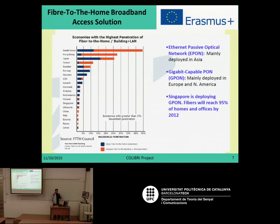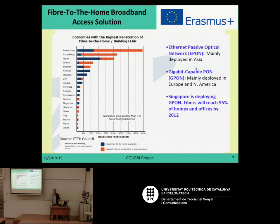How has this been evolving? In a report from the Fiber to the Home Council — we will see several documents from this council, which monitors the market, economics, and trends — we see that in 2009 it was mainly Asia leading the market, with South Korea and Hong Kong first on the list, closely followed by Japan. There were two main standards: Ethernet Passive Optical Network (EPON), mainly deployed in Asia, and Gigabit-capable PON (GPON), mainly deployed in Europe and America. For example, coverage moved from about 50% of the population to nearly 100% in places like Singapore.